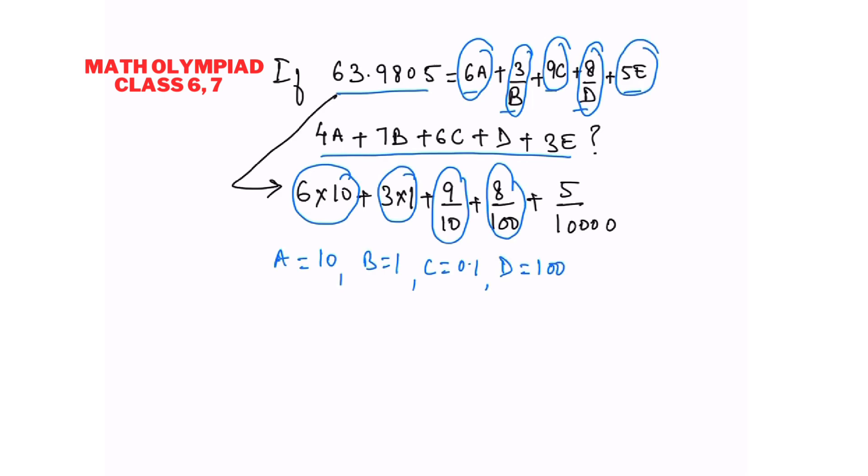And 5e is equal to 5 by 10,000 so our e is 0.0001, so we just need to put these values in our required equation.